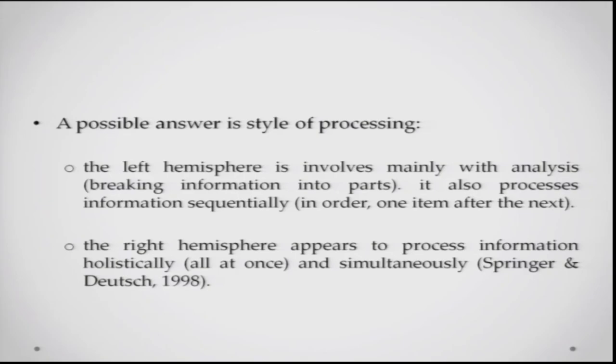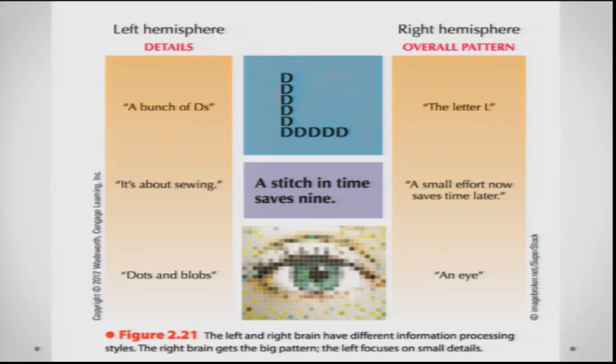For example, consider an L formed by a bunch of Ds. The left hemisphere, breaking it down into components, will see a bunch of Ds. The right hemisphere, processing holistically, will see the letter L. The same stimulus is perceived differently by each hemisphere depending on its style of processing — this is one of the basic explanations of hemispheric specialization.